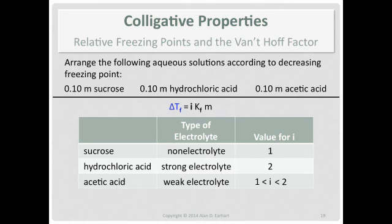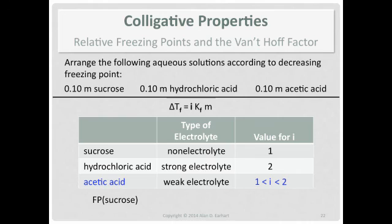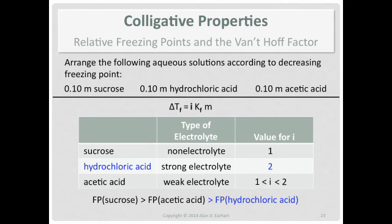Let's think about delta T and compare the i values. The solution with the smallest delta T will have the highest freezing point, and since all concentrations are the same, the smallest delta T corresponds to the smallest i value. Sucrose has i equal to one — the smallest — so it has the highest freezing point. Acetic acid is next with i between one and two. Hydrochloric acid has i equal to two, giving the largest delta T and therefore the lowest freezing point. So the order from highest to lowest freezing point is: sucrose, then acetic acid, then hydrochloric acid.